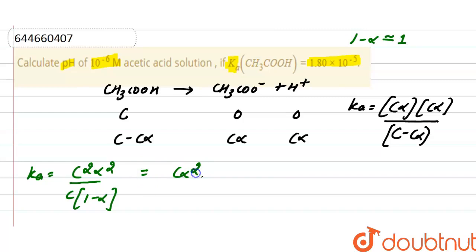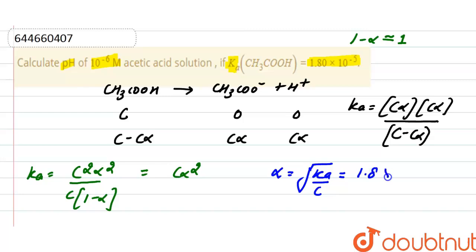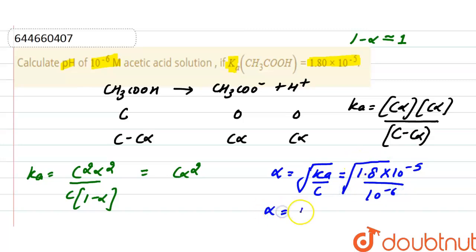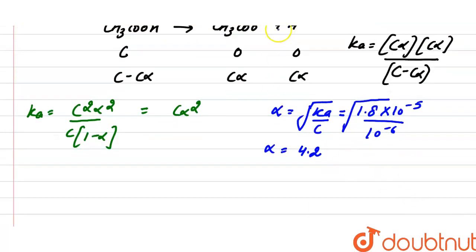From here, we find the degree of dissociation alpha, which equals the square root of Ka divided by C. The value of the acid dissociation constant is 1.8 into 10 raised to the power minus 5, and the concentration C is 10 raised to the power minus 6. From here, the value of alpha works out to 4.2. The concentration of H⁺ ions equals C times alpha.